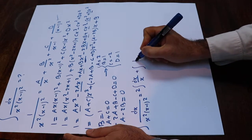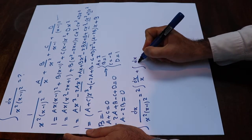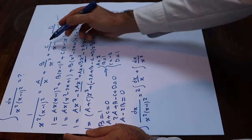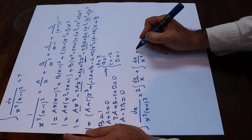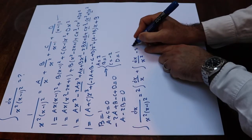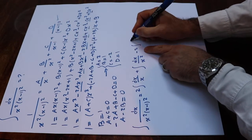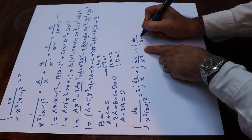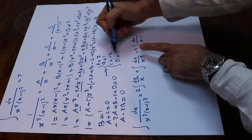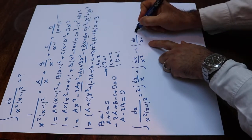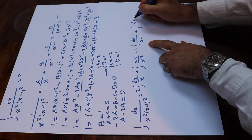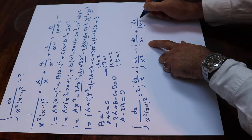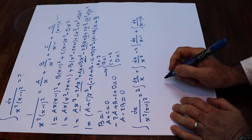plus, since C equals minus 2, minus 2 times the integral of dx divided by (x minus 1), plus, since D equals 1, the integral of dx divided by (x minus 1)².